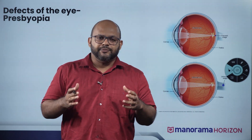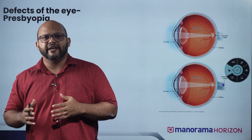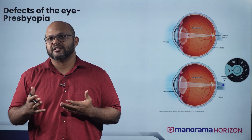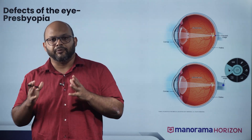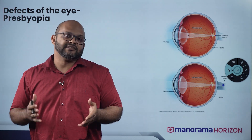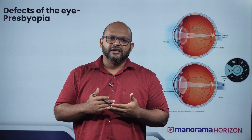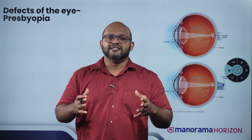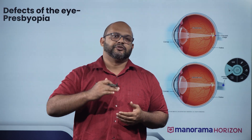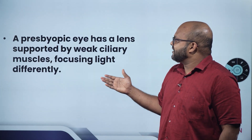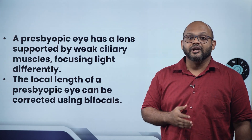Hyperopia and myopia can occur in any age group. But presbyopia normally occurs in older age groups. As we age, our bodies lose strength and flexibility — the ciliary muscles become weak, so we cannot focus on objects clearly. This vision problem is called presbyopia. To correct it, we use bifocal lenses, where one section is concave and the other is convex — one for reading and one for distance. A presbyopic eye has a lens supported by weak ciliary muscles. The focal length of a presbyopic eye can be corrected using bifocal lenses.